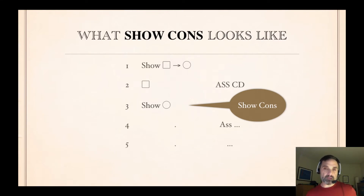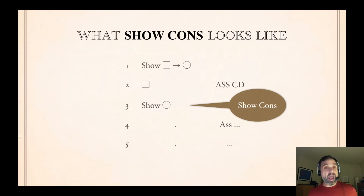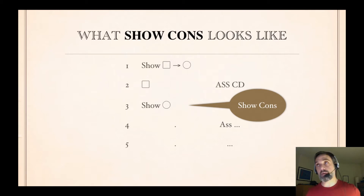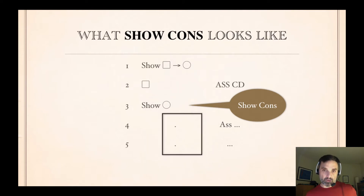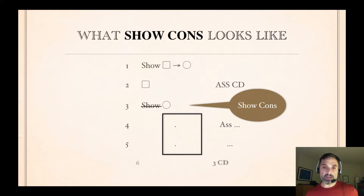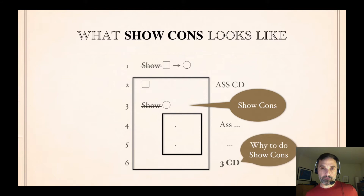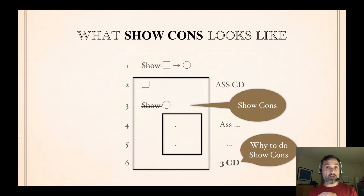Then you'll make an assumption appropriate to whatever you're trying to show. If it's another conditional you'd say assume CD and immediately do another show consequent. It might not be a conditional — it might be a sentence letter or a negation, in which case you'd make an indirect assumption. At some point you complete the subderivation, you've shown the consequent of line one, so you box and cancel line one and you're done.